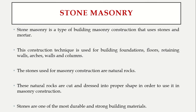Moving on to the topic — we know what brick masonry is; next we have stone masonry. Stone masonry is a type of construction where we use stones, and to join these stones together we use mortar. You can build foundations, floors, walls, arches, or columns with stones. The stones used are natural rocks, sometimes cut and dressed properly, sometimes roughly dressed or undressed, and based on that we have classifications.